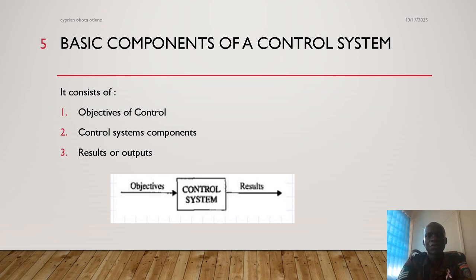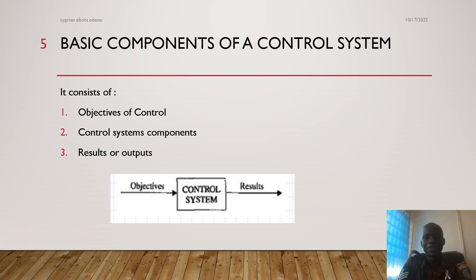The basic components of a control system include: first, the objectives of control; second, the control system components; and third, the results or output.